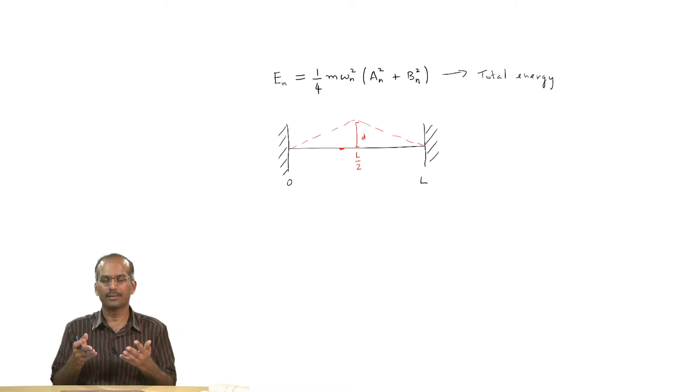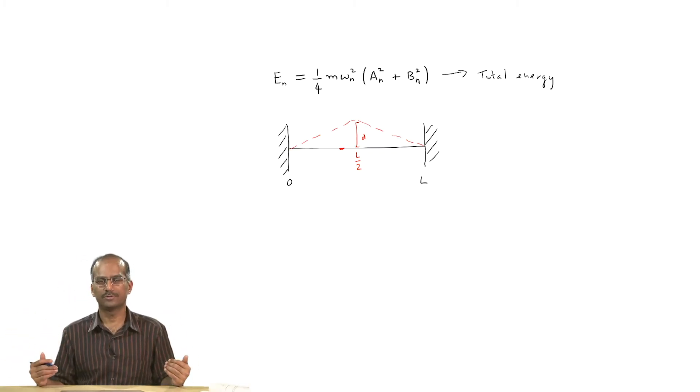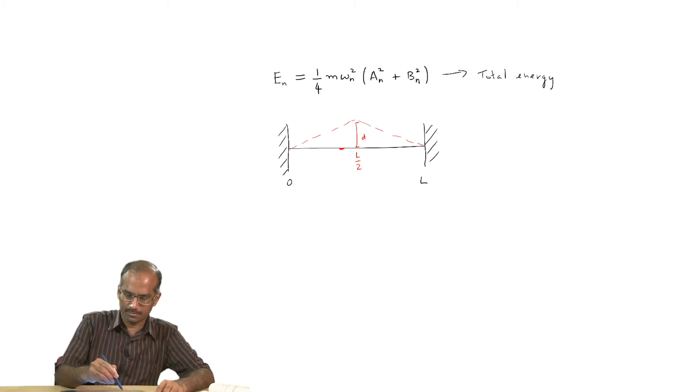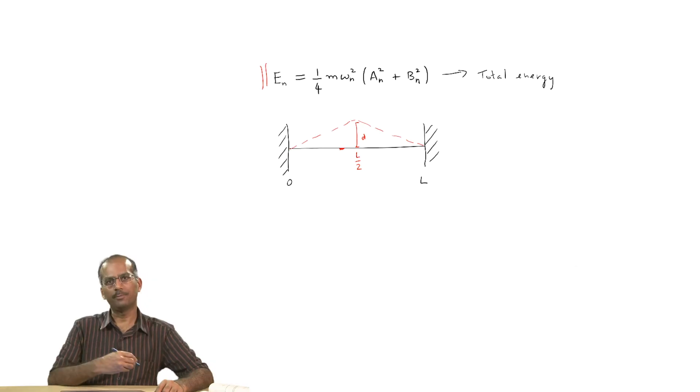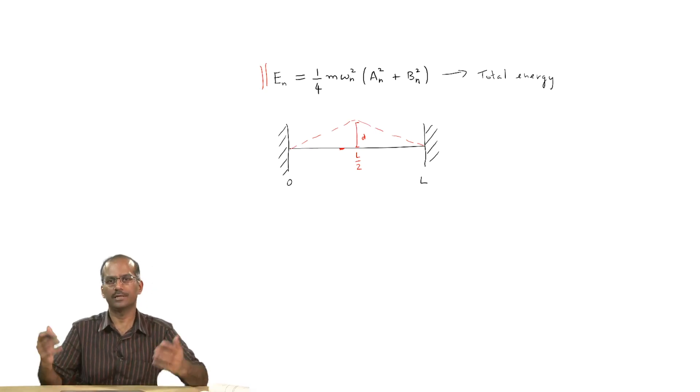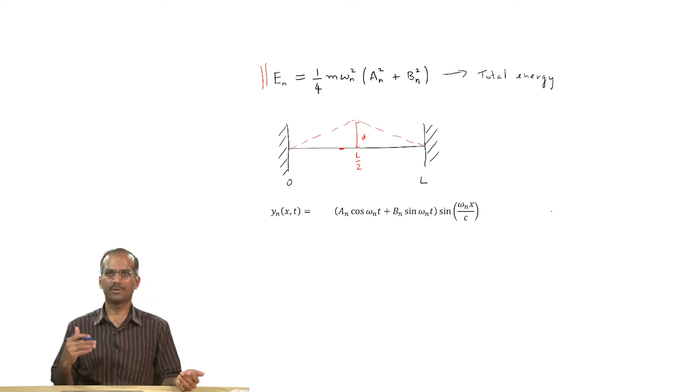When I excite the string which normal mode did I excite? When you arbitrarily excite strings like this you are not exciting a single normal mode, you are most probably exciting a collection of normal modes. Meaning that it is a combination of displacements of several modes. What I am going to see as vibrating string subsequently will be well approximated by several different normal modes. In principle you could say that it is going to get contributions from pretty much all the normal modes.